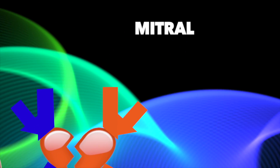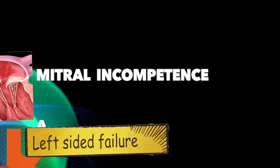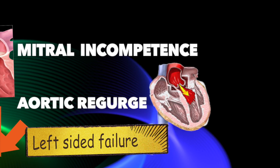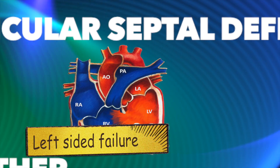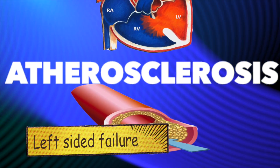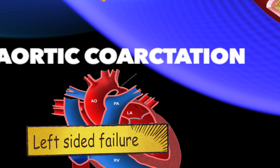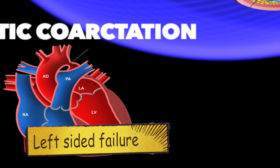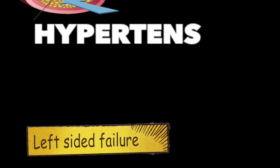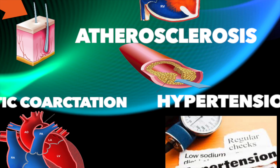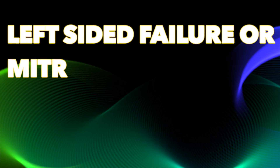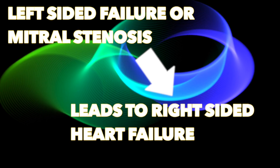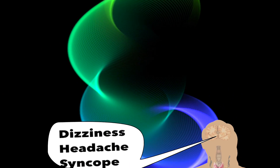Causes of left-sided failure include increased venous load such as mitral incompetence and aortic incompetence, ventricular septal defects, and increased pressure load such as atherosclerosis, aortic coarctation, and hypertension. The most common cause of right-sided heart failure is left-sided heart failure or mitral stenosis.